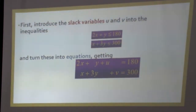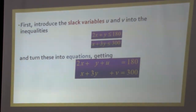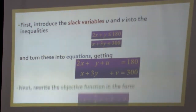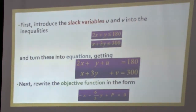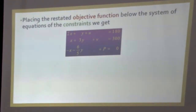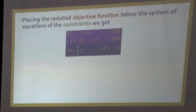Introducing slack variables U and V into the inequalities converts them to equations: 2X + Y + U = 180 and X + 3Y + V = 300. The objective function P = X + (6/5)Y is rewritten as −X − (6/5)Y + P = 0. We now have three equations, and with these we construct the initial simplex table.